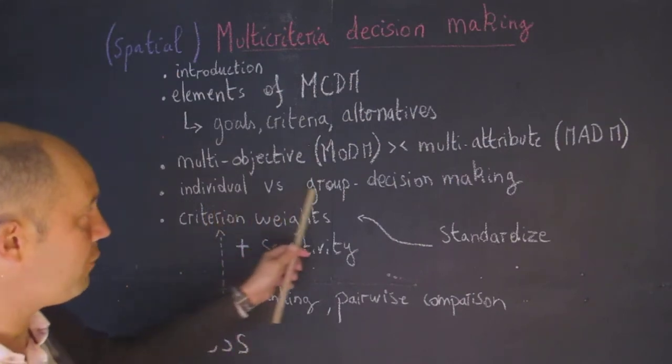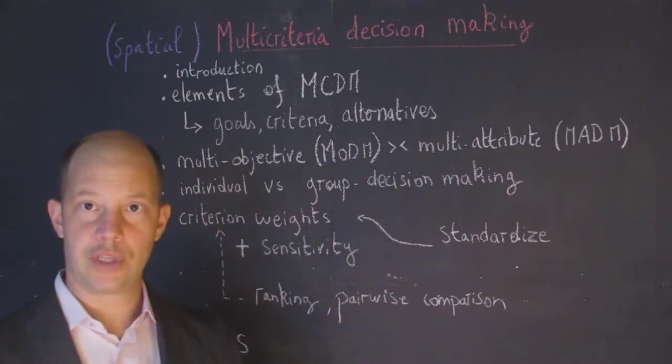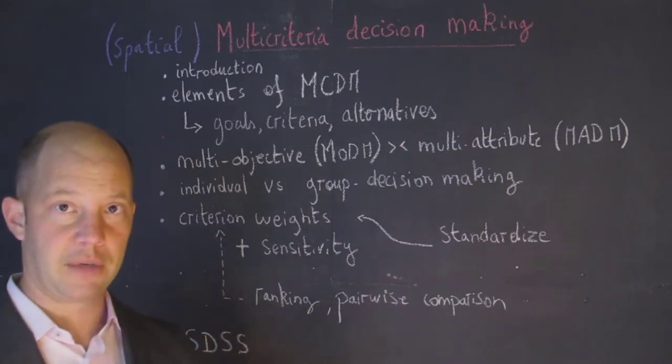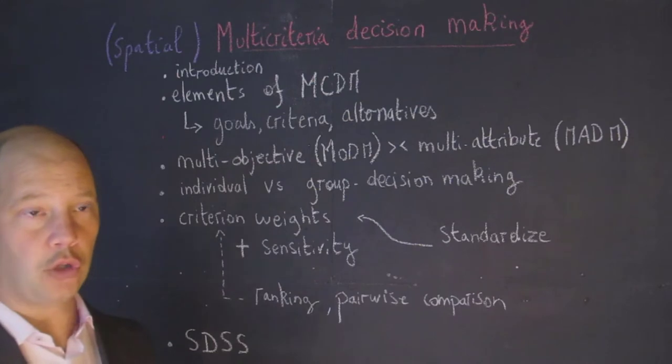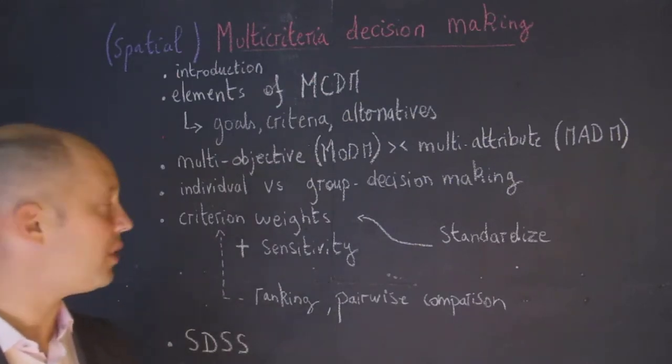Next we'll talk about individual versus group decision-making. Sometimes you make a decision for yourself, sometimes the decision has to be made by different stakeholders. So how do we agree on preferences?